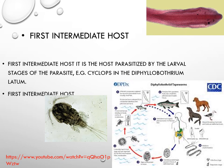The first intermediate host is one in which the host is parasitized by larval stages of the parasite. An example is Cyclops in Diphyllobothrium latum — Cyclops are small aquatic creatures that take up Diphyllobothrium eggs. When eaten by fish, or accidentally by human beings, the disease is transmitted. This tapeworm causes diphyllobothriasis.